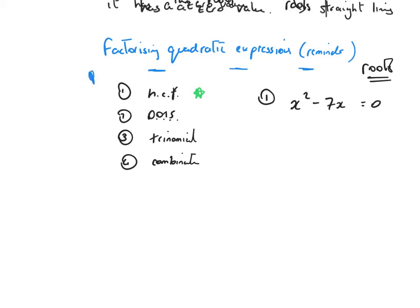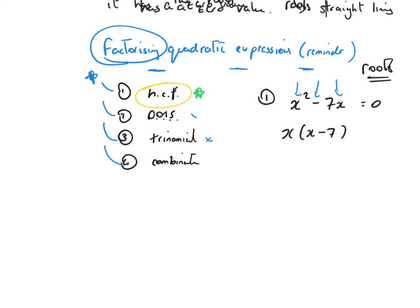To do so, I go back to factorising: highest common factor, difference of two squares, trinomial, or a combination. This is not a trinomial — it hasn't got three terms. It's not a difference of two squares either, so it's just a highest common factor question. The common factor is x. x times x gives x², and x times 7 gives 7x, so it factors to x(x − 7) = 0.